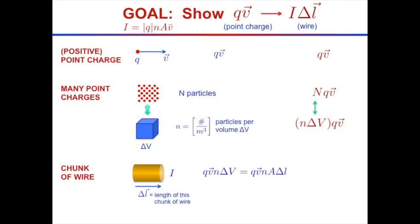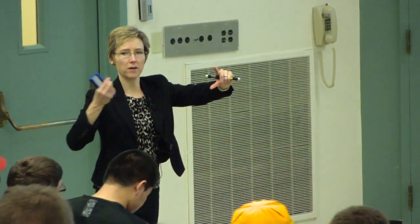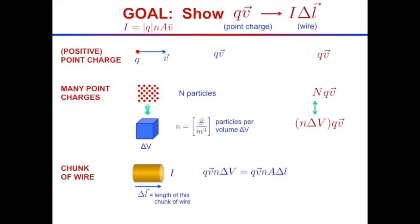In a chunk of wire with cross-sectional area A and length delta-L, I have a current going through it. The volume is A times delta-L, so the number of electrons is little n times A times delta-L.